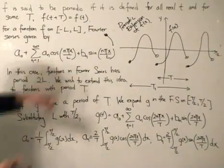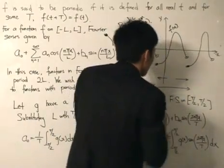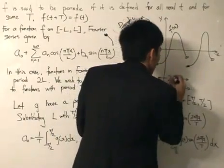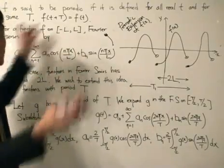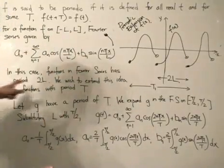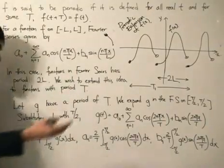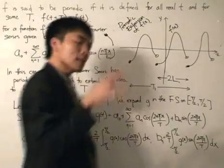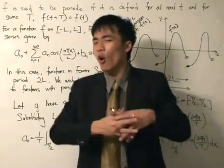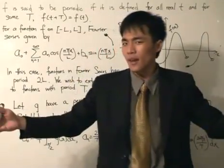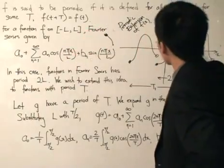Functions in the Fourier series have the period of 2L — it's from minus L to L, so the period is 2L. We wish to extend this idea to functions with the period of T. We can use the Fourier series and by that have the periodic extension of f. Because when we changed variables from minus pi to pi to minus L to L, the period became 2L, and the cosine and sine functions also have period 2L — so the period of the Fourier series matches the period of the function, which is why we're at liberty to do the periodic extension.